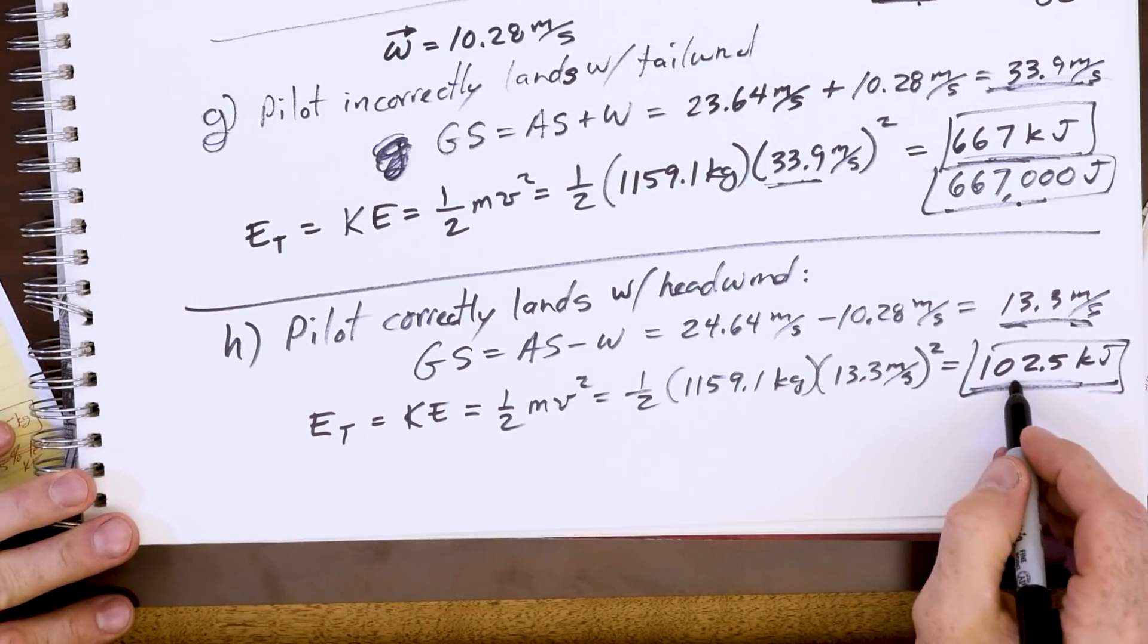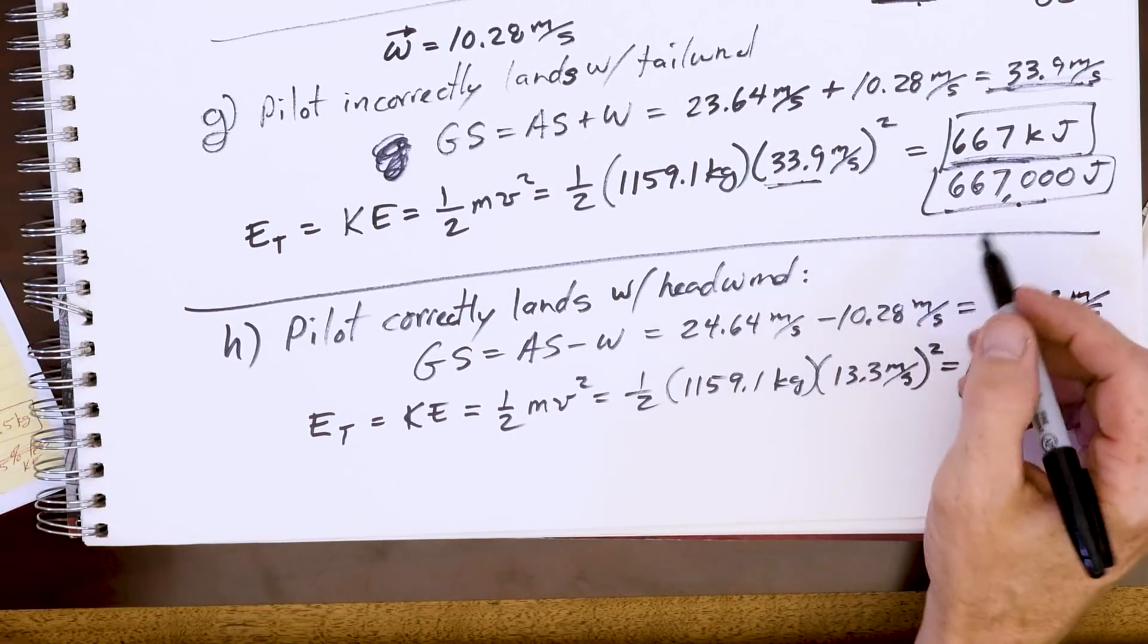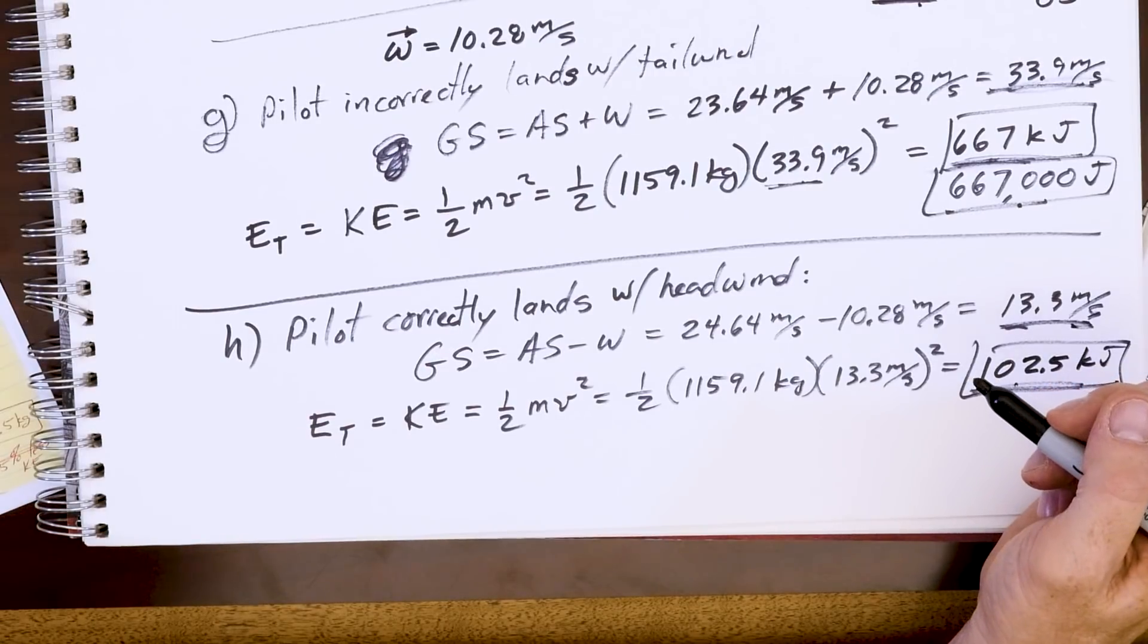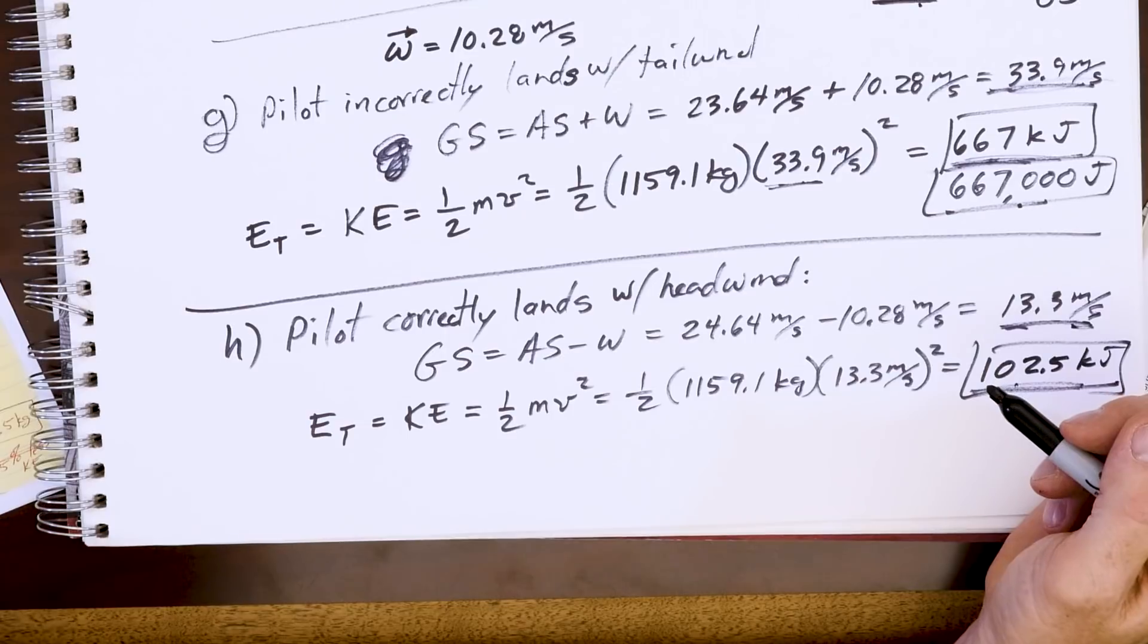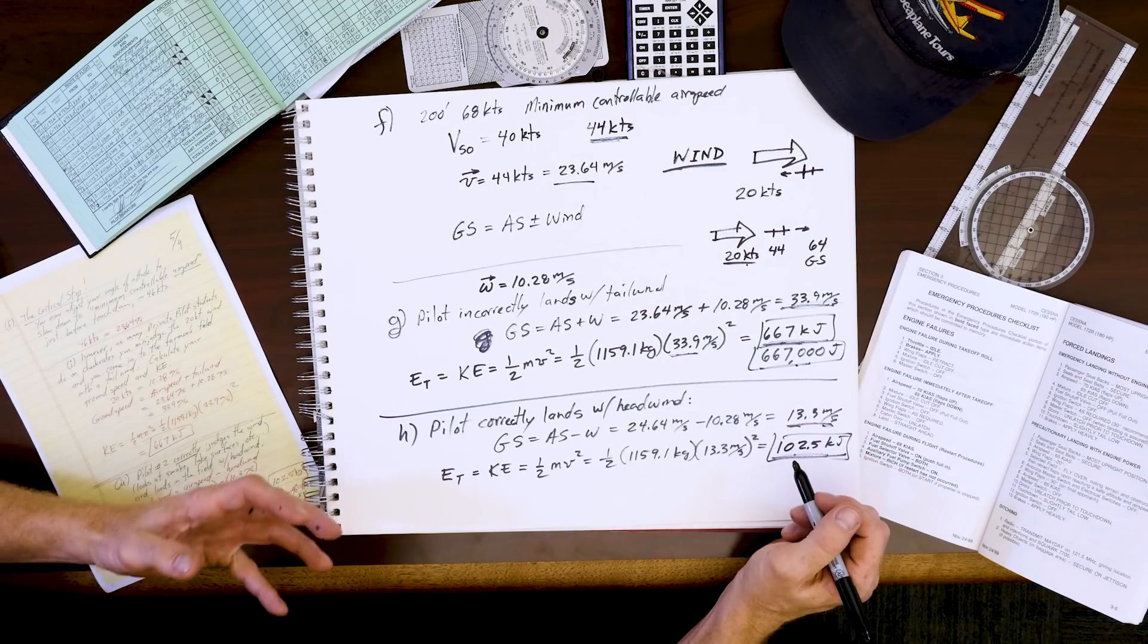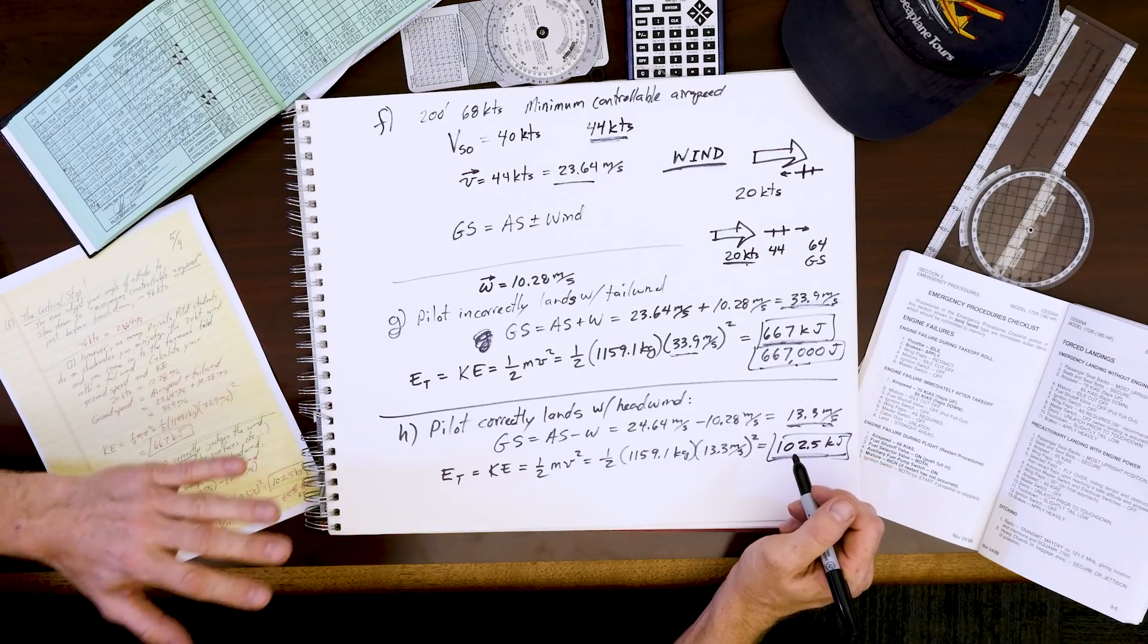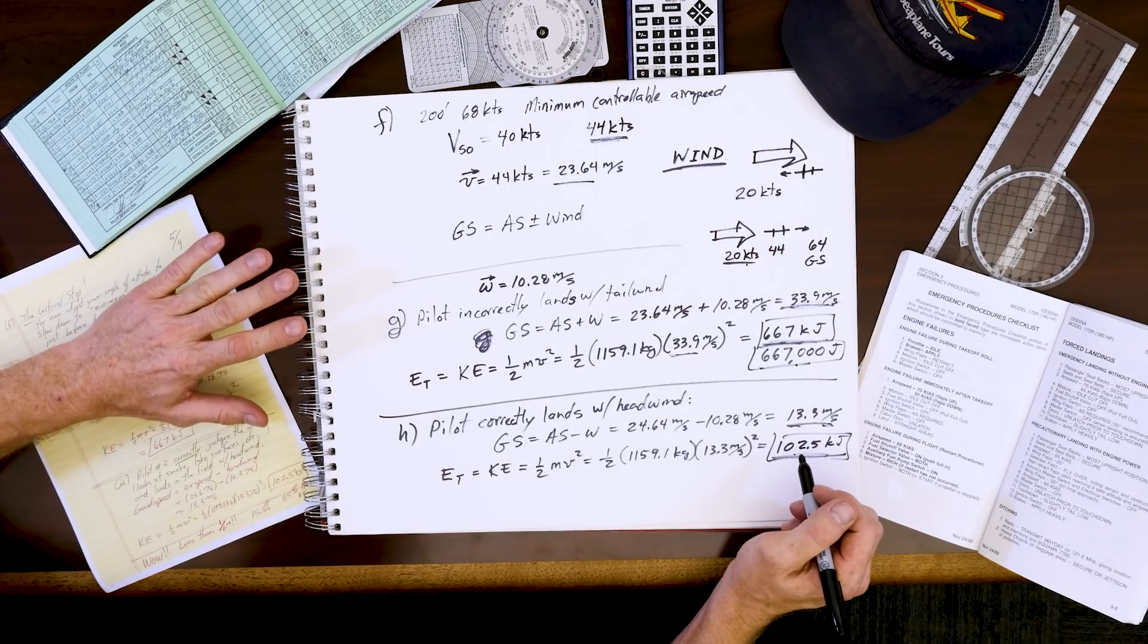Look at that: 100 compared to 670 - a factor of six, six times more energy while landing. This can mean the matter of life and death, because where does all that energy go?